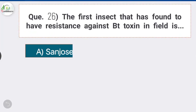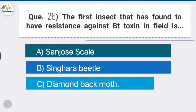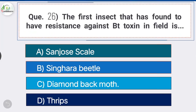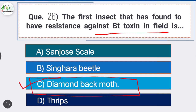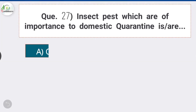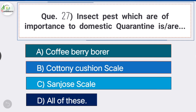Question 26: The first insect found to have resistance against Bt toxin in the field is Option C, the correct answer: diamondback moth. Diamondback moth is the only species that has evolved resistance to biological control by the Bt toxin from Bacillus thuringiensis in field populations.